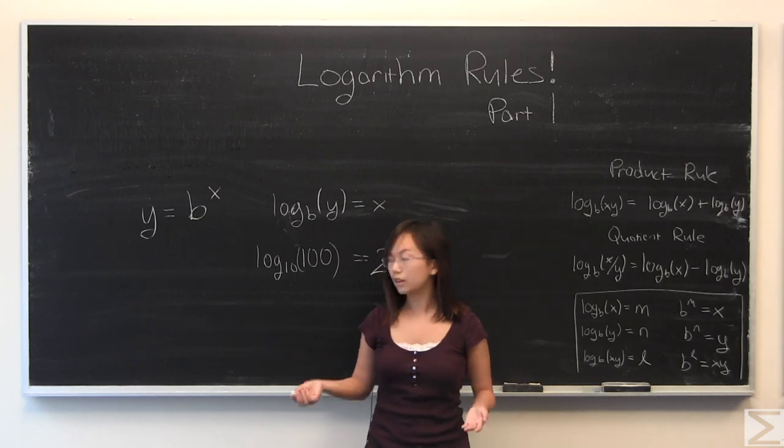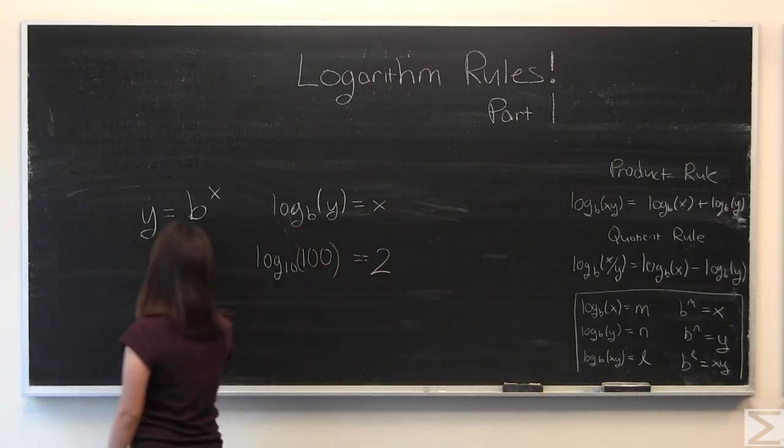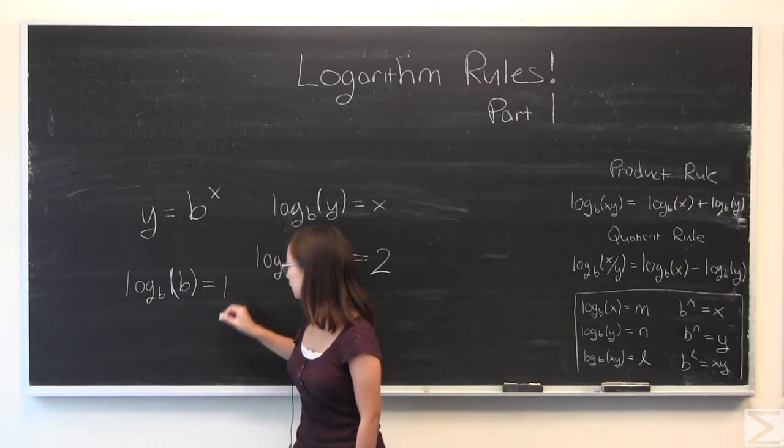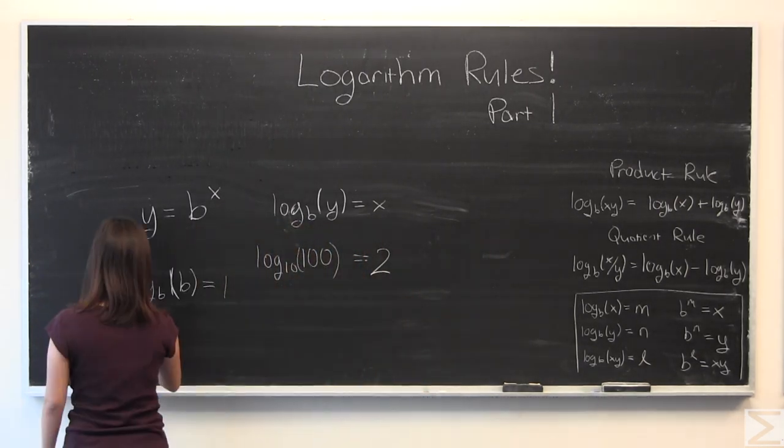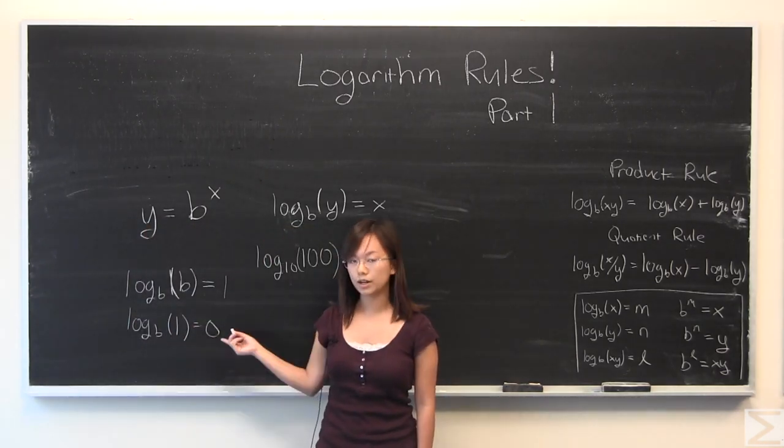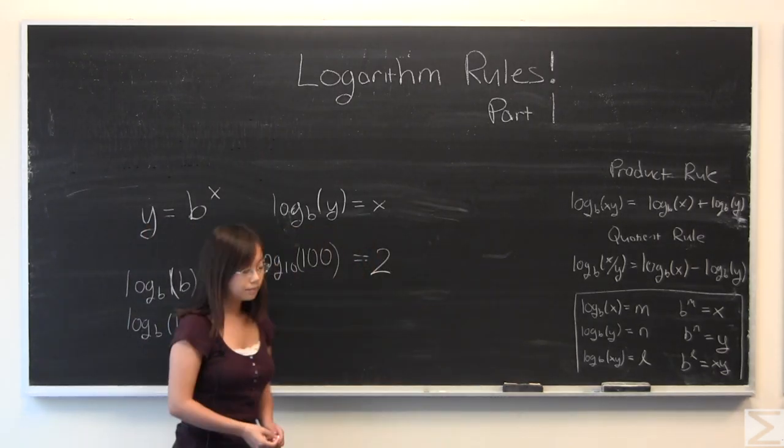Some quick rules, if you're willing to accept what I've told you about logs: log base b of b is equal to 1, because b to the power of 1 is equal to b. Log base b of 1 is equal to 0, because b to the power of 0 is equal to 1.